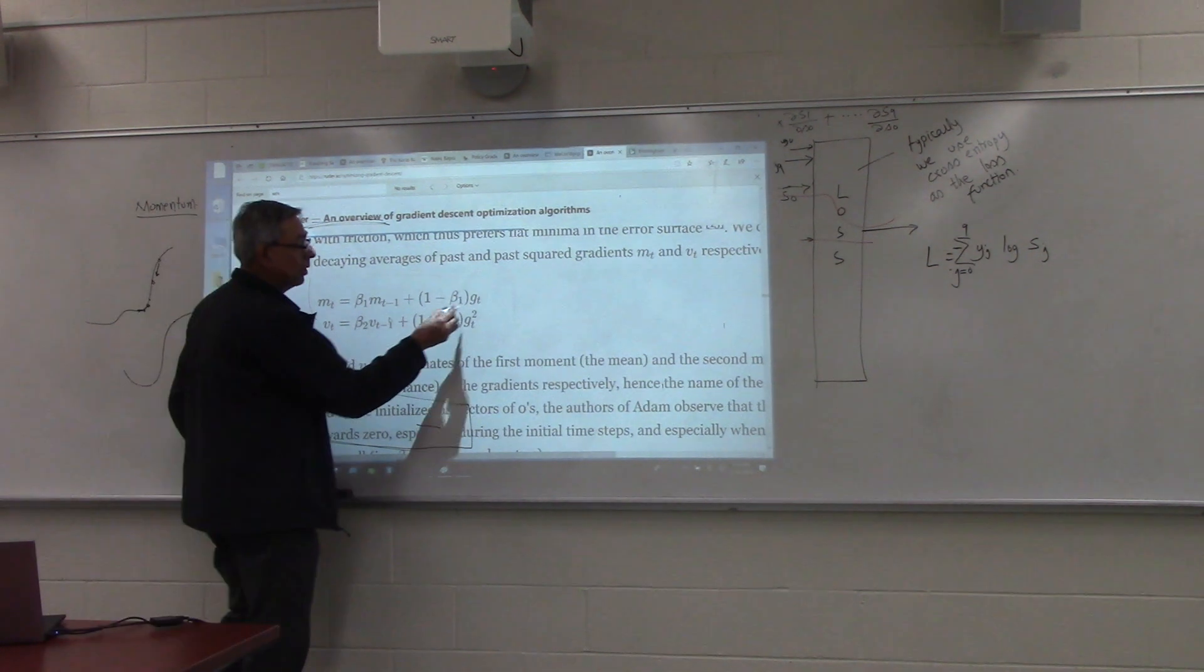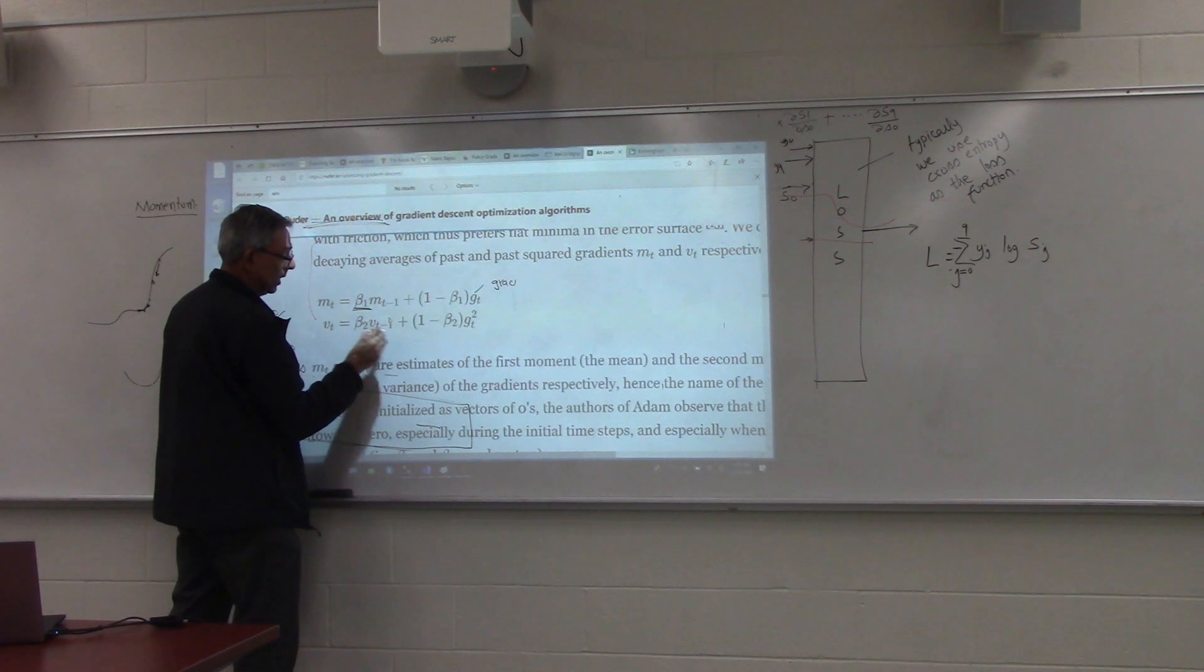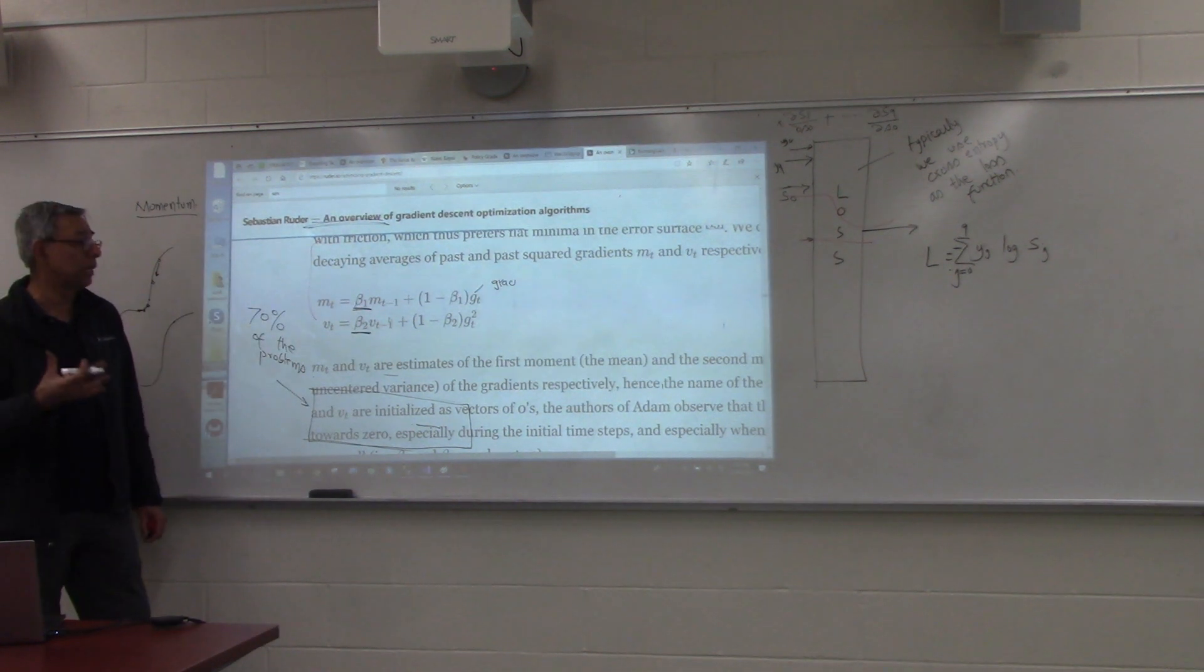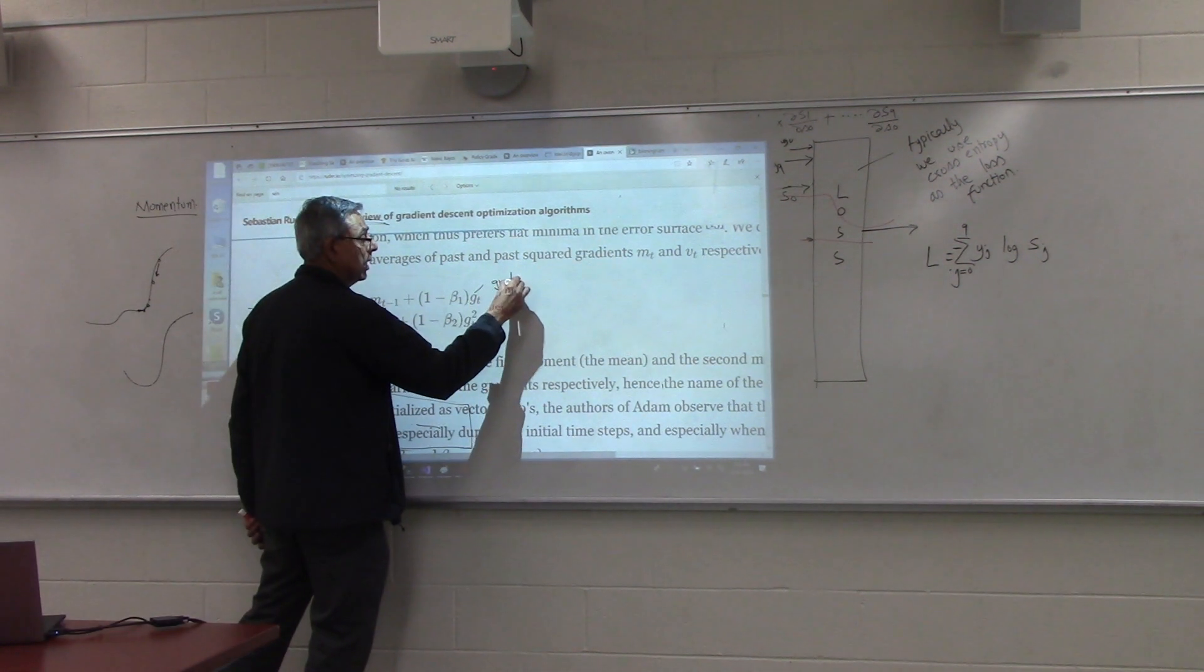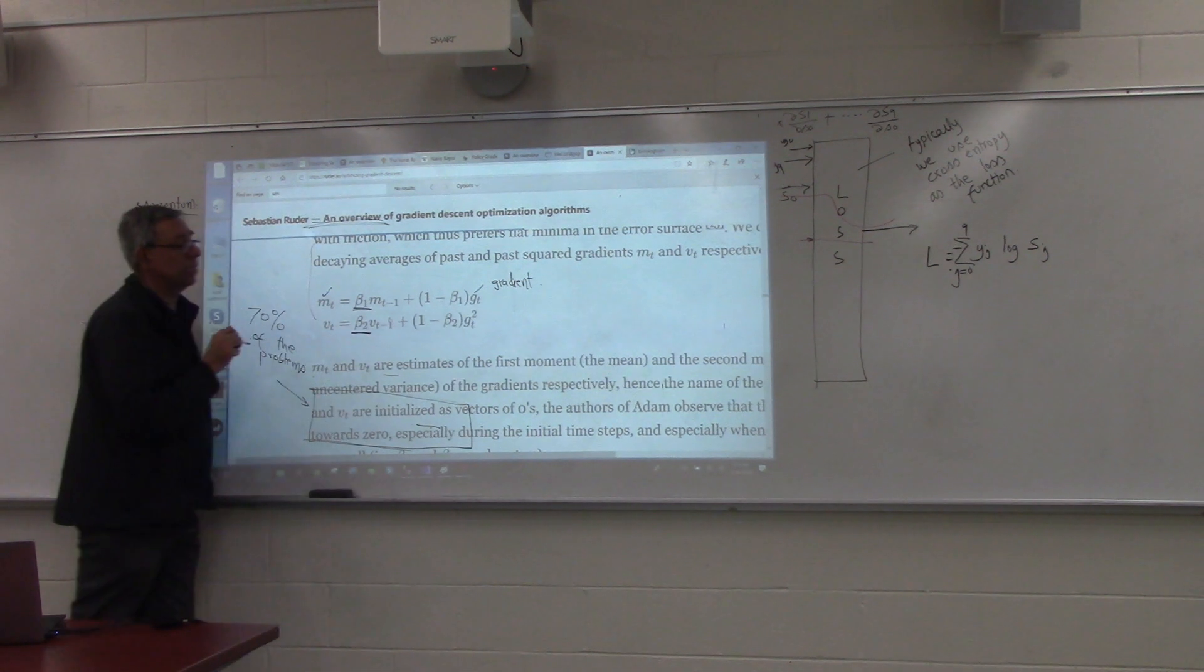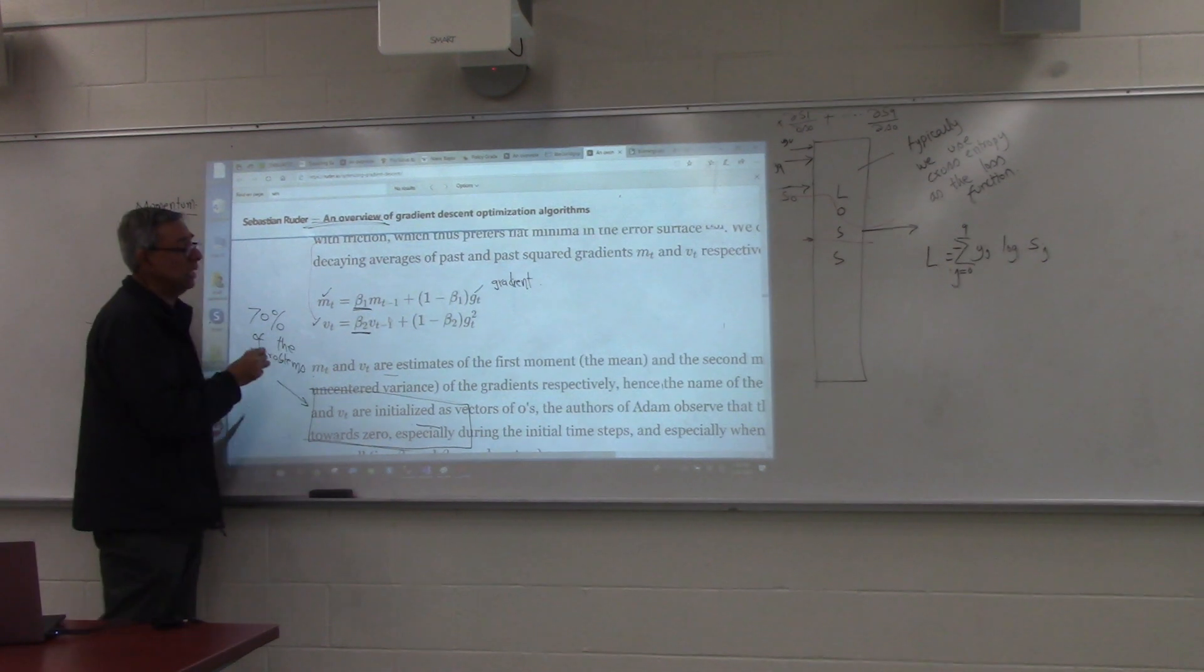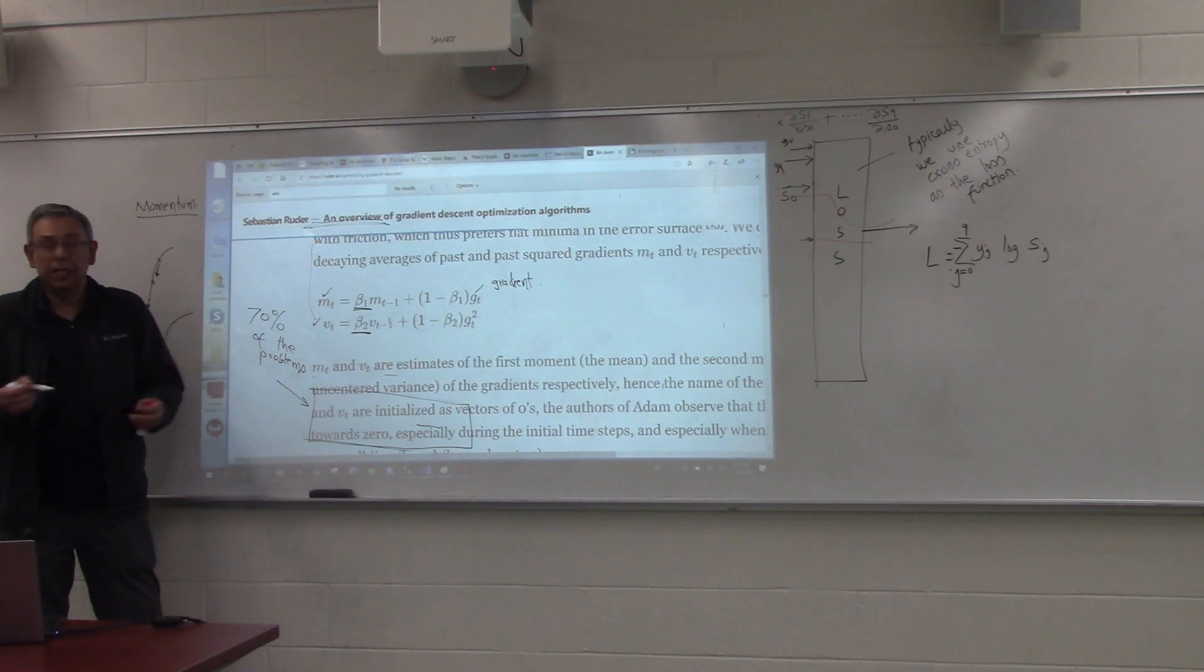Each time you compute the gradient, remember beta 1, beta 2 are fixed. You will pick them in the beginning, like 0.9, 0.98, whatever. So each time you compute the gradient, can you compute mt based on the current value of the gradient? Yes. Can you compute vt based on the current value of the gradient? All you're doing is squaring it. Yes.